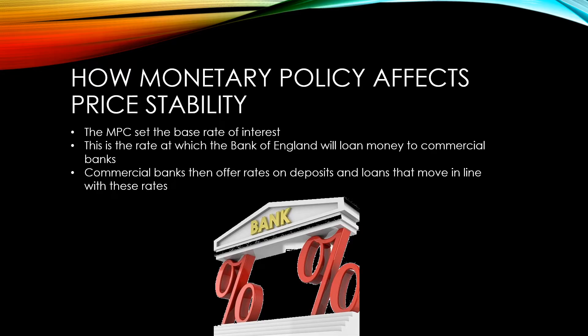Commercial banks then offer rates on deposits and loans that move in line with these rates. For instance, they'll offer slightly less on deposits and they'll charge slightly more on loans. This is part of the way that banks make their money.